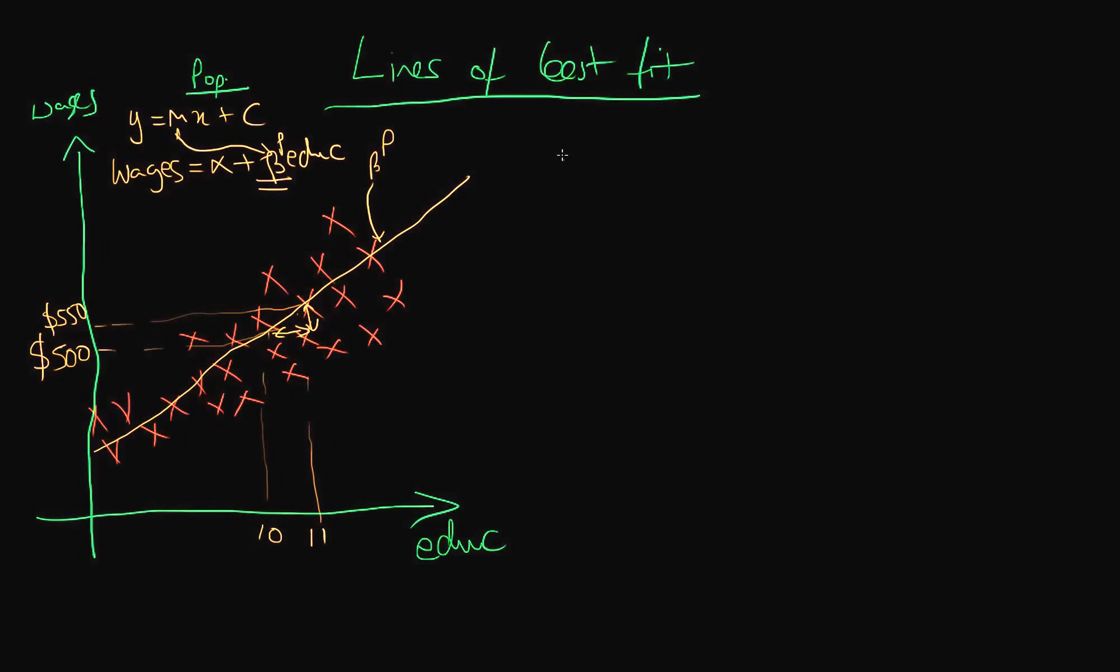In econometrics we normally don't actually deal with a population data set because it's very rare we actually have entire population data sets. Normally we only have a sample, so perhaps we have maybe 10 of these individuals from the sample. So maybe it's these people which I'm highlighting here. And we can again plot them in two-dimensional space of wages against education, but now we have fewer points than we did before because we've only got a sample of our population.